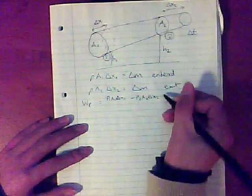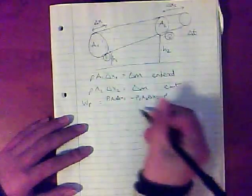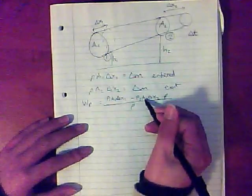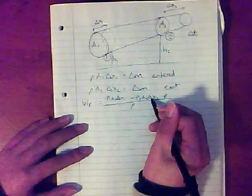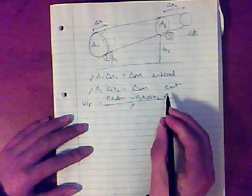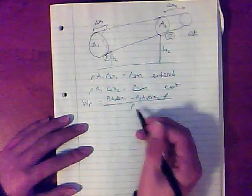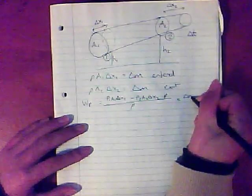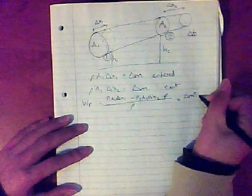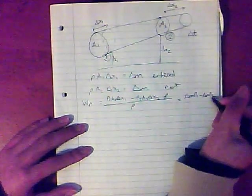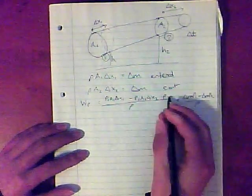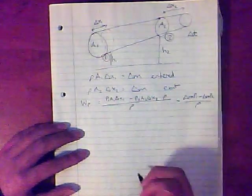If you multiply the top line by the density, rho, and also divide by rho to keep it the same thing, you can now group things together. Rho A delta x is the mass. So, by multiplying by rho and dividing by rho, you can now rewrite this as the change in mass times pressure 1 minus the change in mass times pressure 2 divided by rho. Simply by just multiplying and dividing by the same thing and tidying up.